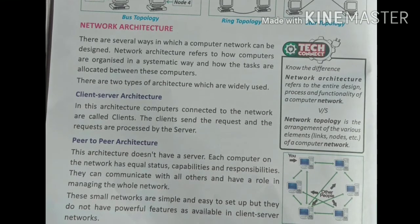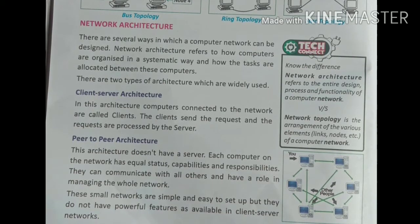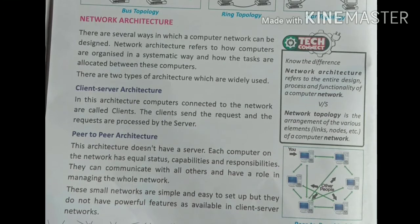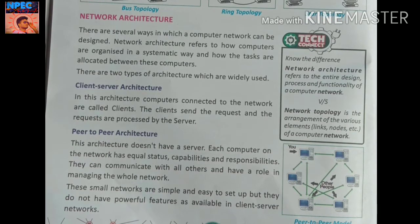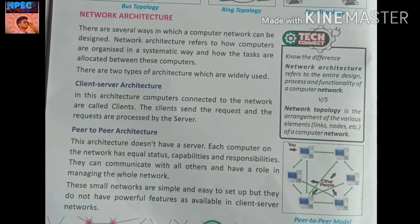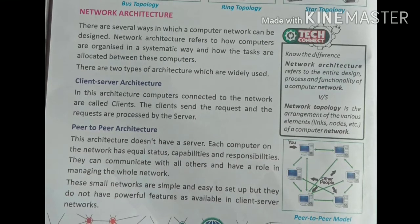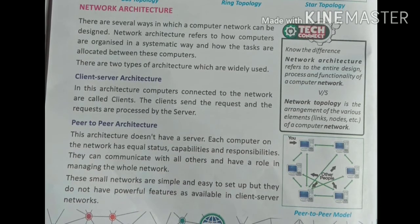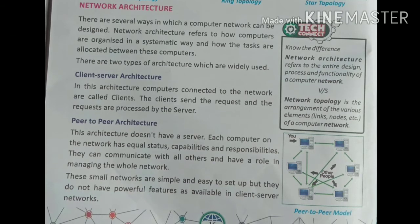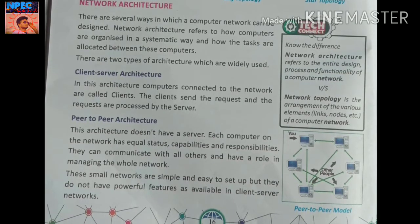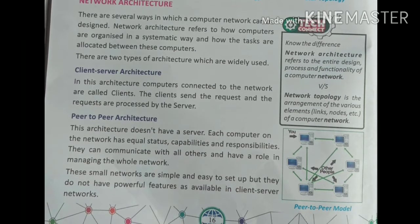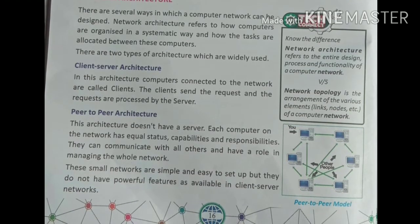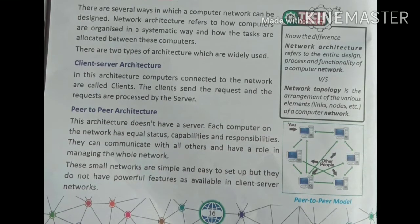As seen in the peer-to-peer model, all computers are connected to each other with none left out. Note: Network Architecture refers to the entire design process and functionality of a computer network, whereas Network Topology refers to the arrangement of elements — nodes and links — of a computer network. Each computer has its own functionality in network architecture.